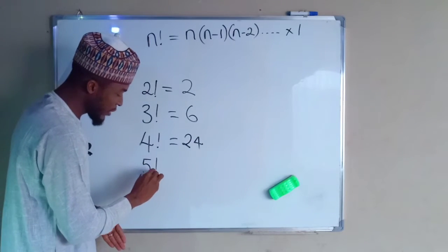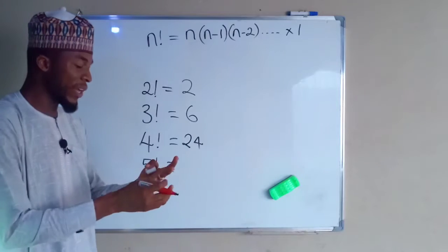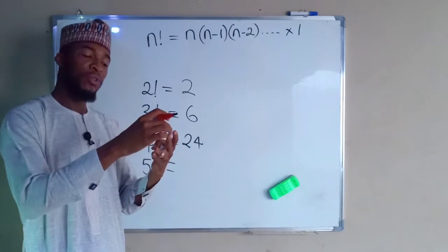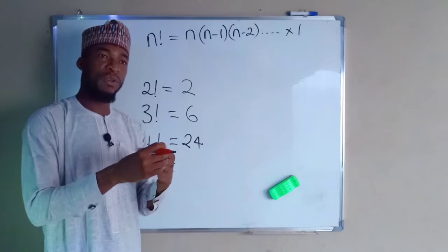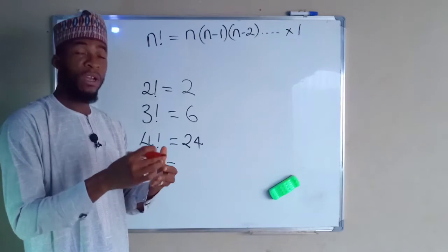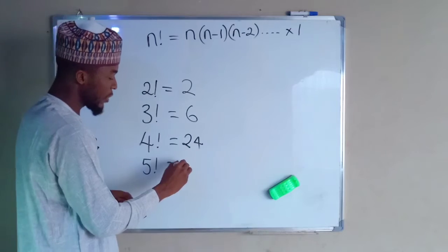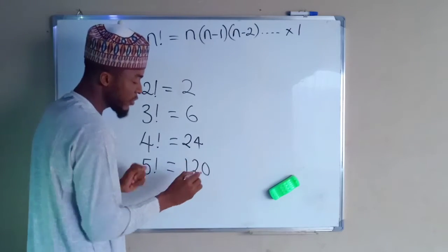What about 5 factorial? 5 factorial is the same thing as 5 times 4, which is 20. 20 times 3 is 60, and 60 times 2 is 120, 120 times 1 is still 120. Let us stop here.